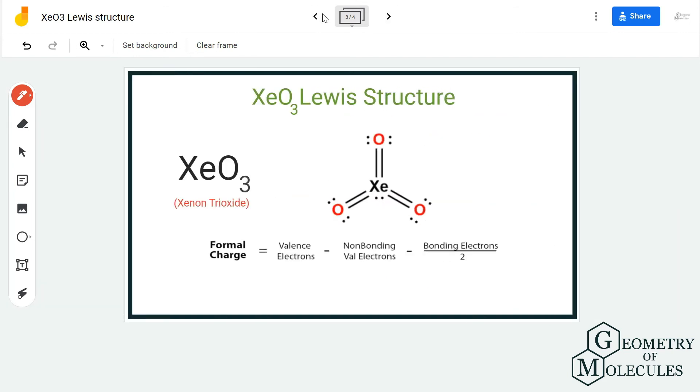We are going to form three double bonds by shifting a pair of electrons from oxygen atoms in between the xenon and oxygen atoms. We are going to move these electrons over here, this one over here, and even this one over here. Doing that, now we have three double bonds.